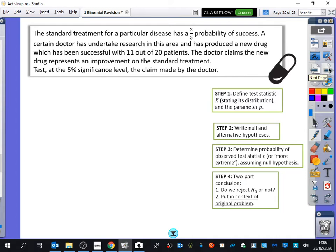The standard treatment for a particular disease has a two-fifths probability of success. A certain doctor has undertaken research in this area and has produced a new drug which has been successful with 11 out of 20 patients. The doctor claims the new drug represents an improvement on the standard treatment. Test at the 5% significance level the claim made by the doctor. Why has the doctor said that it's an improvement? Because his sample got over half. Good, because he got over half. He got 11 out of 20. The expected amount you would have thought to get, and it's always worth thinking about this, would be two-fifths of 20, which is 8. So he was expecting 8 and he got 11. This is actually how a lot of science works. So it's actually a very useful area of maths to know.